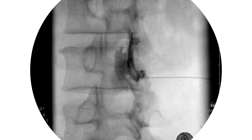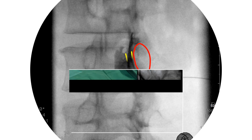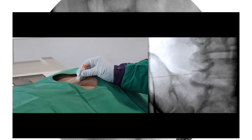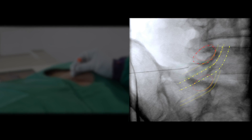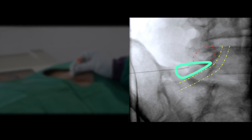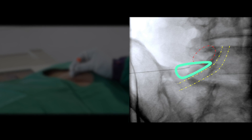Observe the L4 nerve root filling defects passing along the medial border of the pedicle. The nerve root will pass under the pedicle. This triangle looks like the safe triangle on AP view.